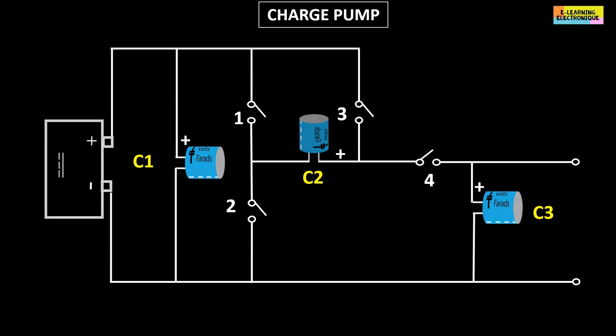During the first phase, switches number 2 and 3 are closed. This leads to the setting in parallel of the two capacitors C1 and C2 with the current generator.